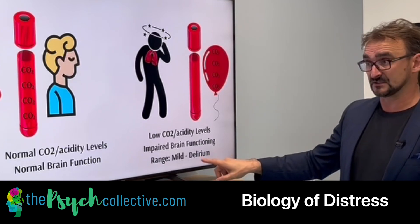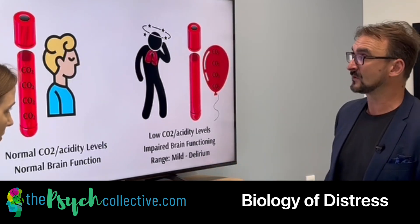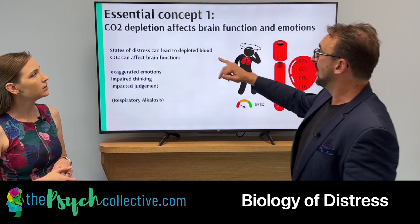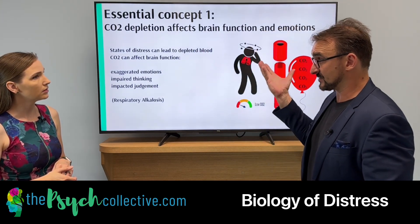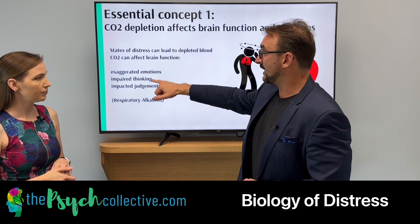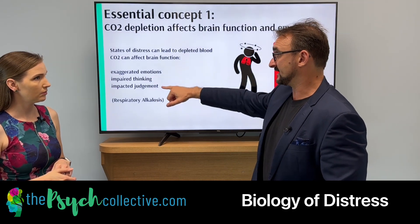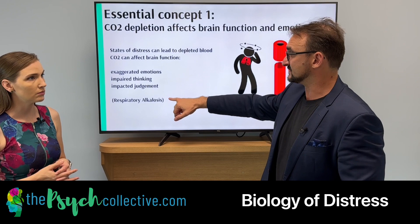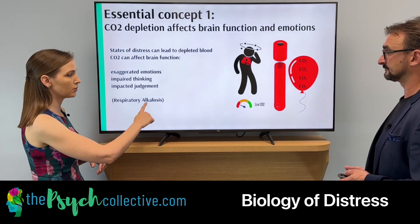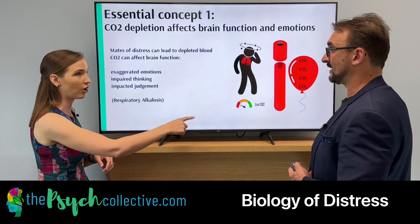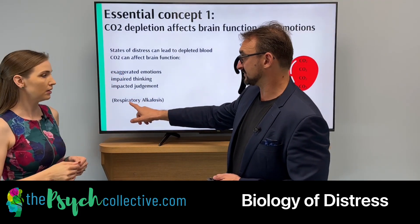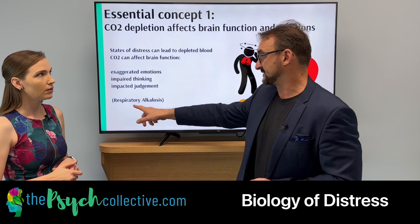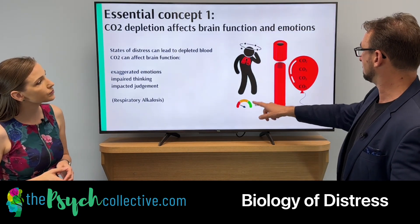That impairment can vary from mild — which is mostly what people experience because they stop — but if you were to continue, you'd actually get delirious. That's the first concept. When that happens, our emotions tend to be exaggerated, our thinking is impaired, and it impacts our judgment. The technical medical term for this state is respiratory alkalosis — alkalosis referring to the blood becoming more alkaline for respiratory reasons. So: low CO2.